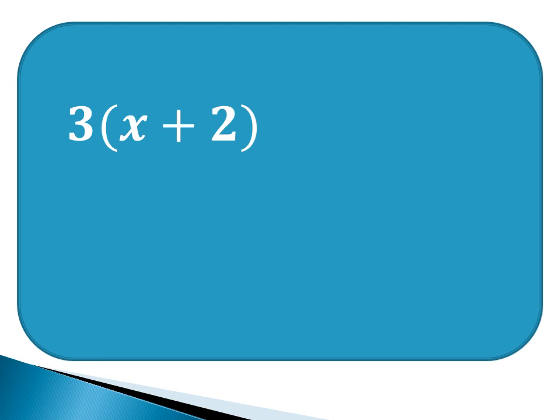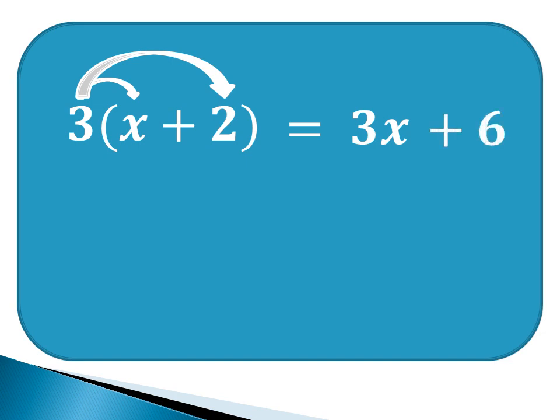Consider 3 times the quantity x plus 2. If we are going to multiply 3 to x plus 2, we can use the distributive property. 3 times x gives us 3x. 3 times 2 gives us 6. The factors here are 3 and x plus 2. The product is 3x plus 6.